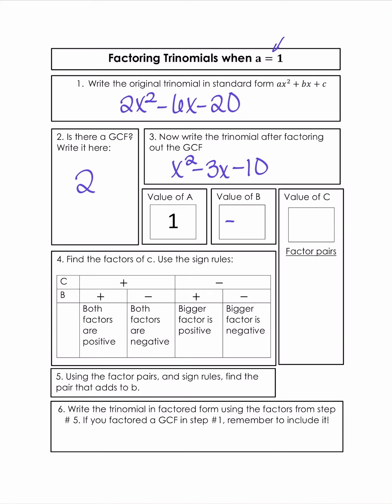So the value of B here is going to be negative 3, and C is negative 10. So if I list out my factor pairs of 10, I have 1 and 10, and then 2 and 5, and then 3, 4, none of those are divisible. We'll divide 10, so we're just going to stop there.